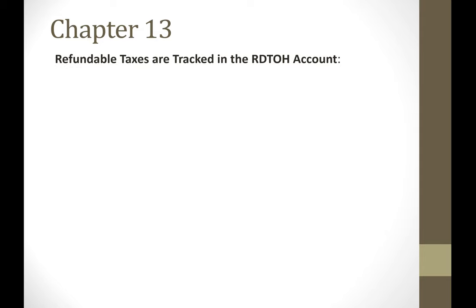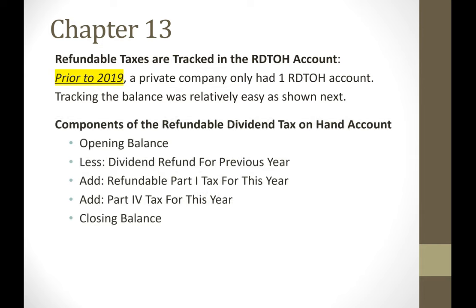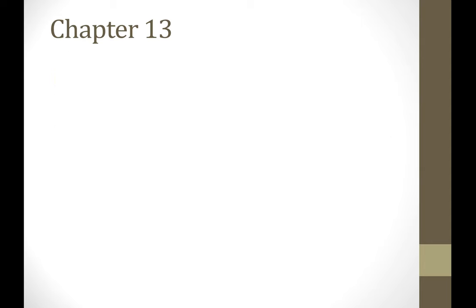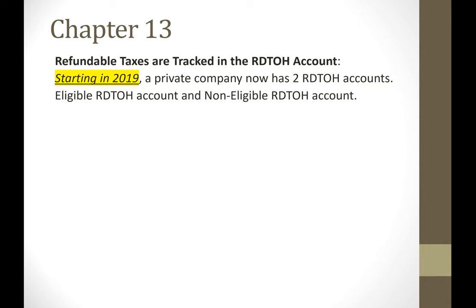These refundable taxes are tracked in the RDTOH account. Prior to 2019, there was only one RDTOH account, which was fairly straightforward to track. We would take the opening balance, subtract any dividend refund received for last year, then add the refundable Part 1 tax and refundable Part 4 tax for the current year — all into one account. In 2019, things changed: a private corporation now has two RDTOH accounts — eligible and non-eligible.